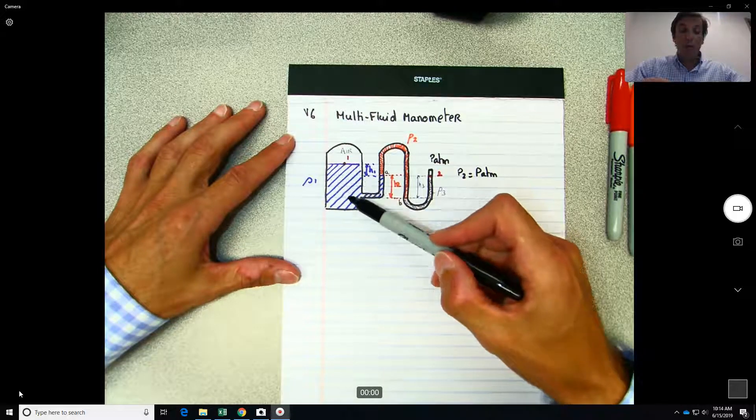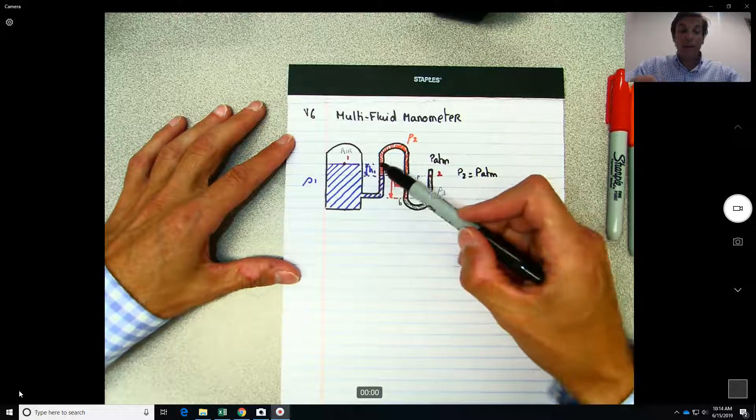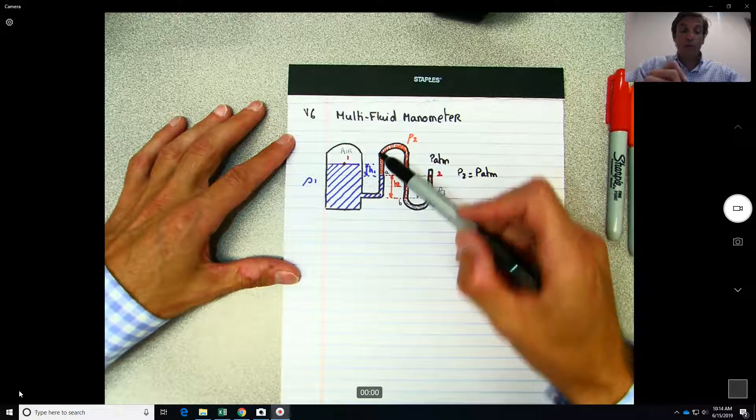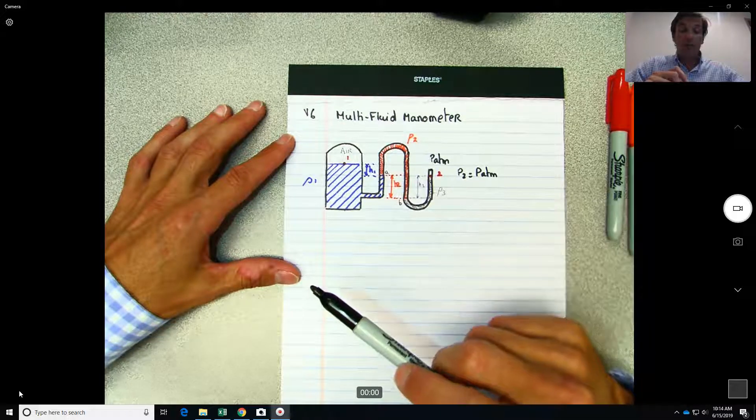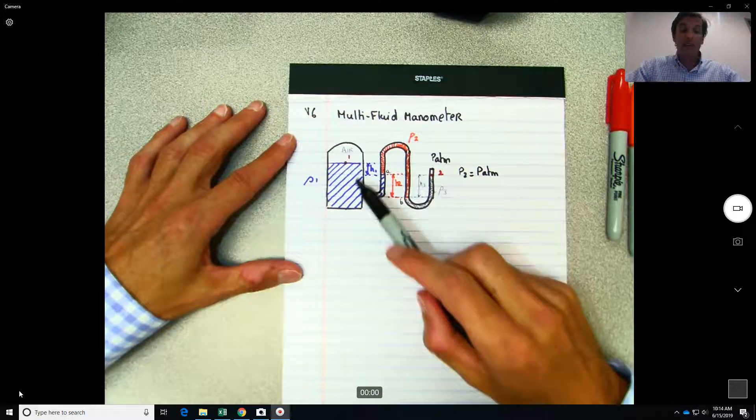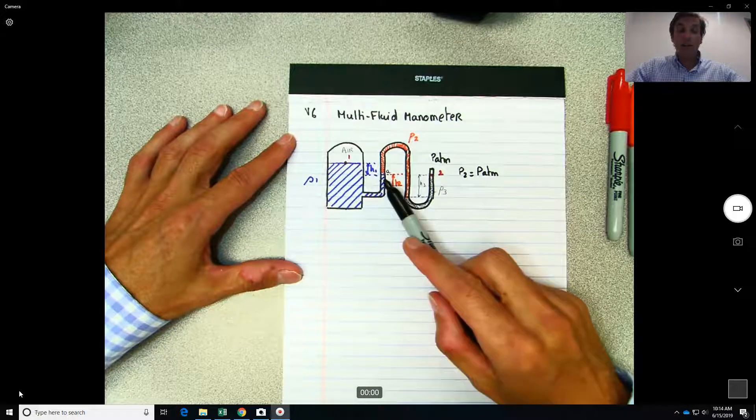And if it was higher than this point, the fluid will be going up. So then what does that mean? That means that actually the pressure one is lower than the pressure A, because otherwise the fluid will go about this line over here.